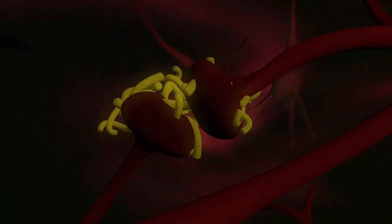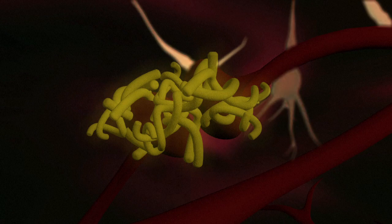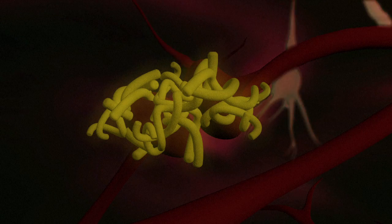A second type of abnormal structure is created by the accumulation of beta-amyloid plaques. These form when proteins in brain cells are processed differently, once again blocking communication channels.